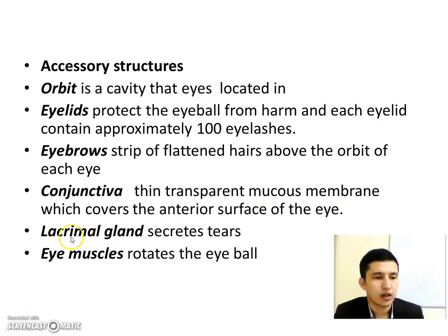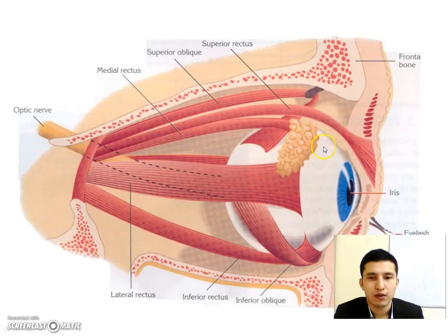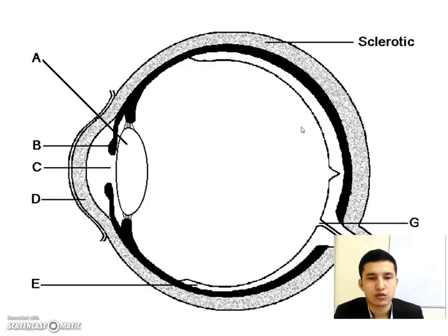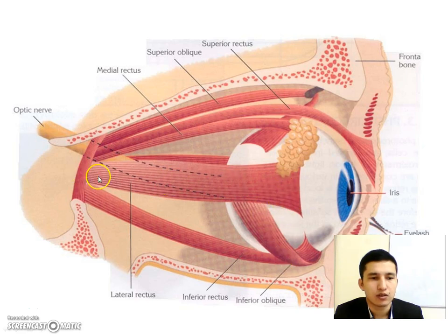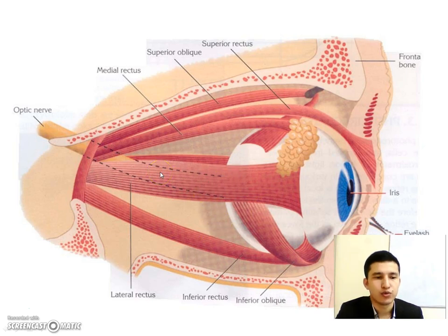The lacrimal glands secrete tears. The eye muscles rotate the eyeball — because of these muscles, you can move your eyes in any direction.